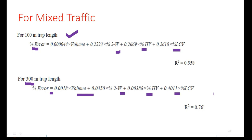If trap length is increased to 300 m, the error reduces and can be calculated using the proposed equation. Beyond 300 m trap length it is generally not practical to take a snapshot unless using drones, so typically a trap of 100 m to 150 m is used on the road to measure density.